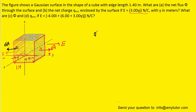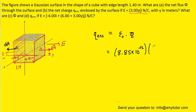For part B, the enclosed charge within the Gaussian surface equals epsilon-zero times the electric flux — this is Gauss's law. Using epsilon-zero equals 8.85 times 10 to the minus 12, multiplying by the total flux gives 7.29 times 10 to the minus 11 coulombs. This is the correct answer to part B.